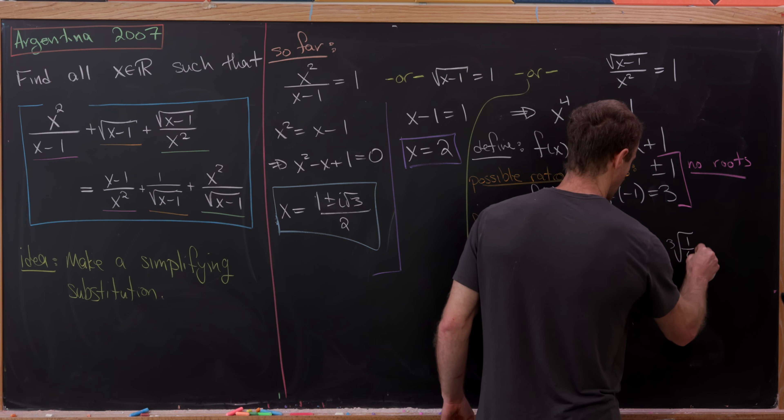Since the quartic has no real solutions, x equals 2 is the only real solution to our original equation. We did also find a complex solution from the first case, so a bonus question would be to find all complex solutions — it's probably not super hard. Post in the comments if you know a strategy for doing that easily.